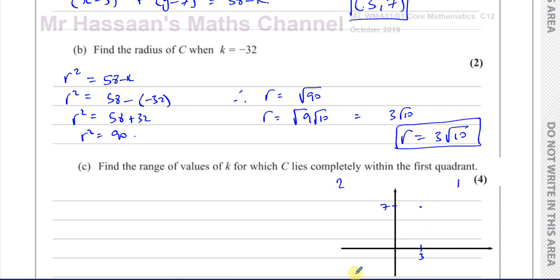The first quadrant is this area here: first quadrant, second quadrant, third quadrant, fourth quadrant. The first quadrant is where both x and y are positive. For the circle to lie completely within the first quadrant, it has to be such that the circle doesn't even touch the y-axis.